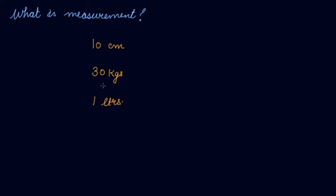Now the numbers here are 10, 30, and 1, and the standard units are centimeter, kg, and liters. Now what does this 10 centimeter mean? It means 10 times as much as the known unit. Now your unit is centimeter, so it is 10 times your known unit. 30 times as much as the known unit.